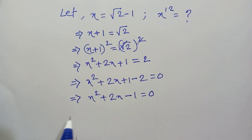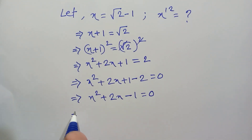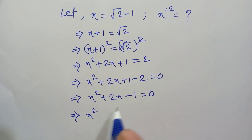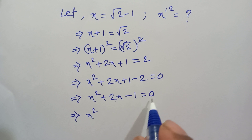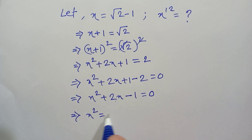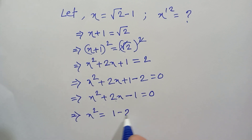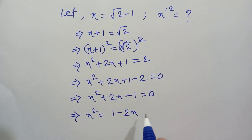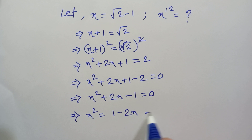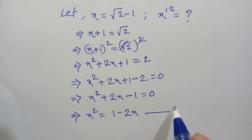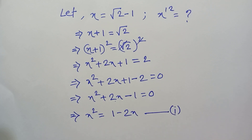Rearranging, x² = 1 - 2x. This is Equation 1.